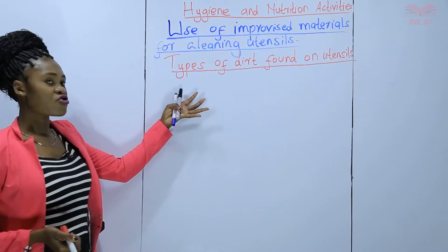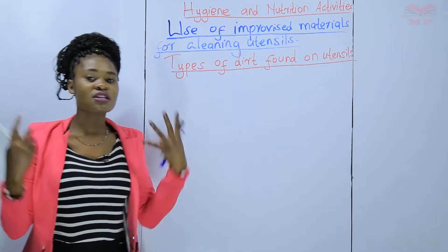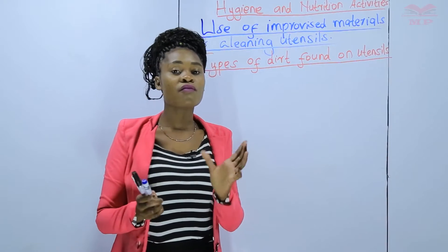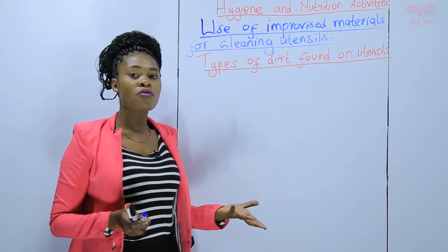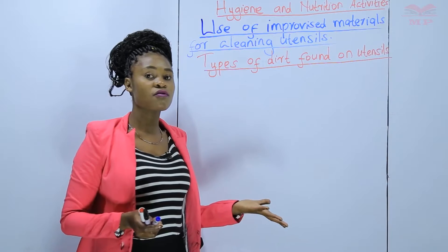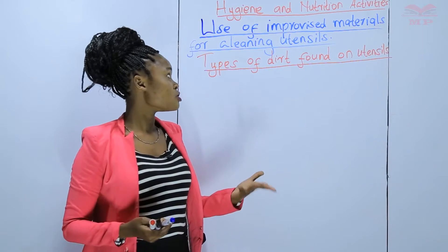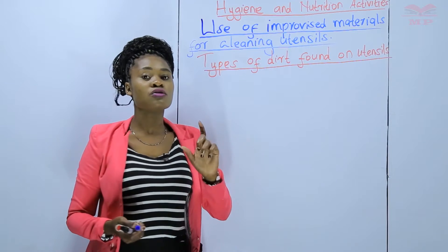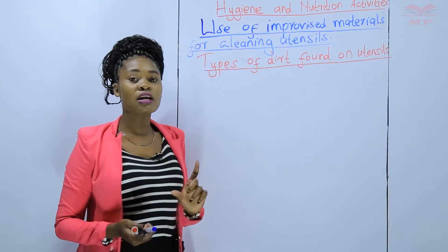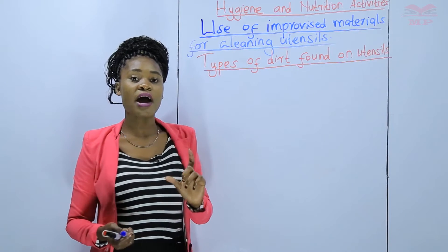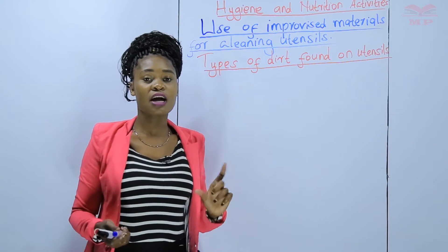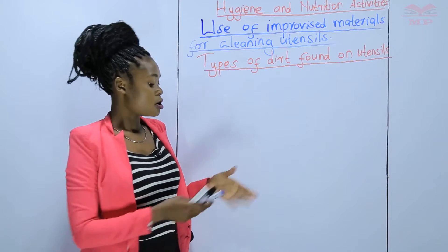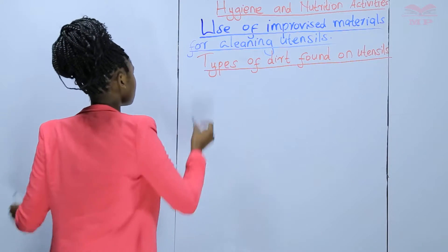Types of dirt that are found on utensils. Utensils are the things we use at home to serve and cook food. When you cook from a sufuria and also serve your food from a plate, they get dirty. We clean utensils at home to keep away germs. Germs can cause diseases and can make us fall sick, so we clean utensils at home.